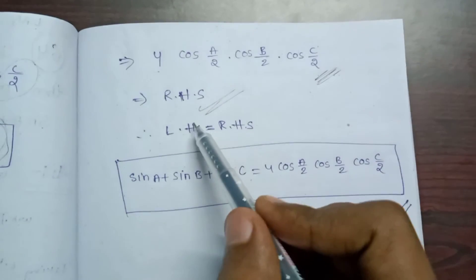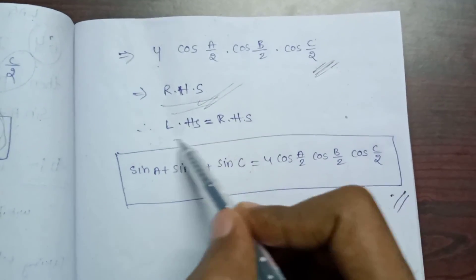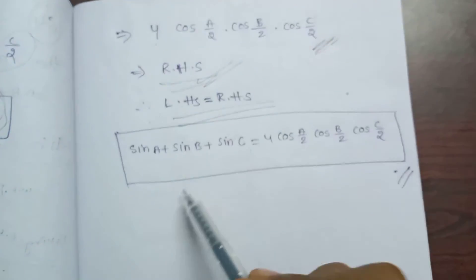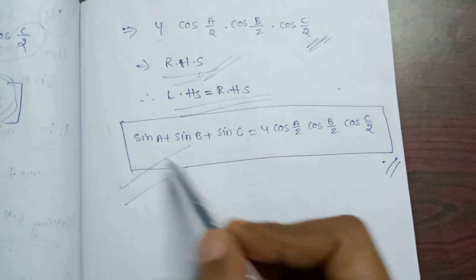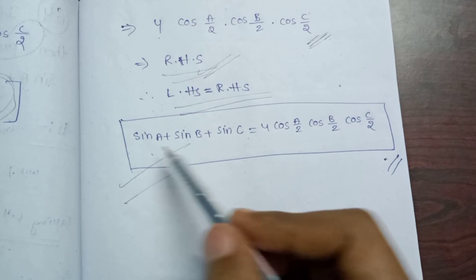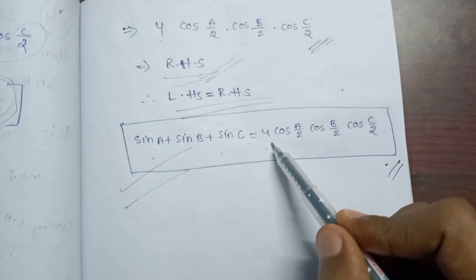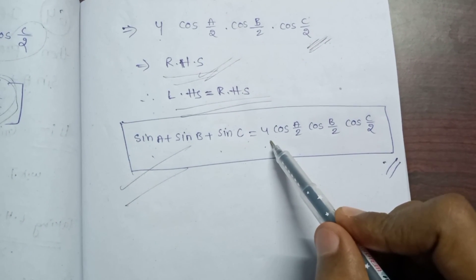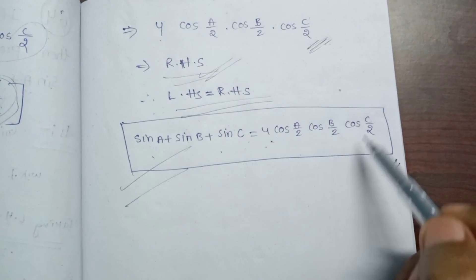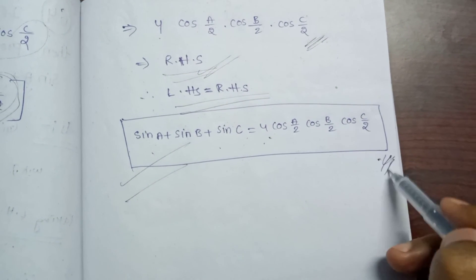Therefore, LHS equals RHS. Hence proved: sin A plus sin B plus sin C equals 4·cos(A/2)·cos(B/2)·cos(C/2).